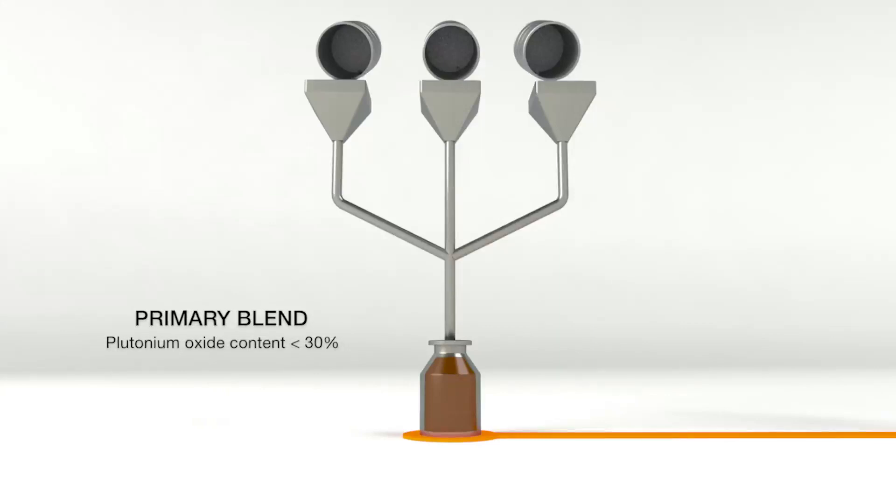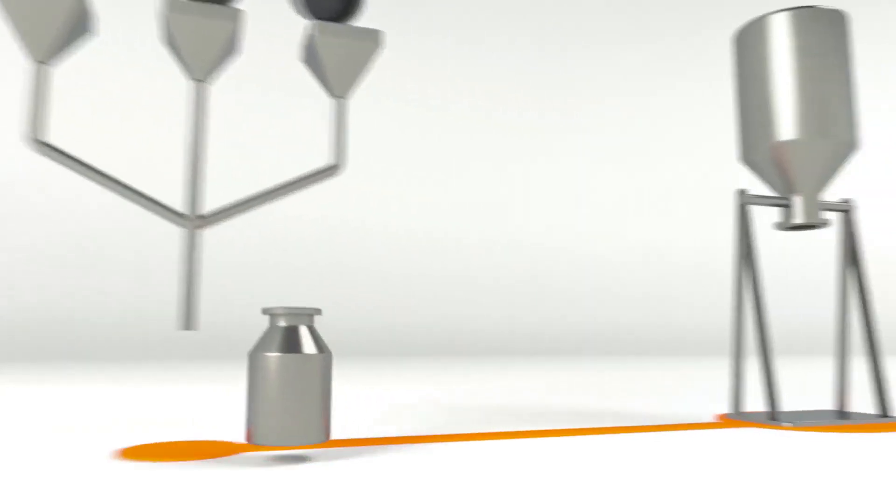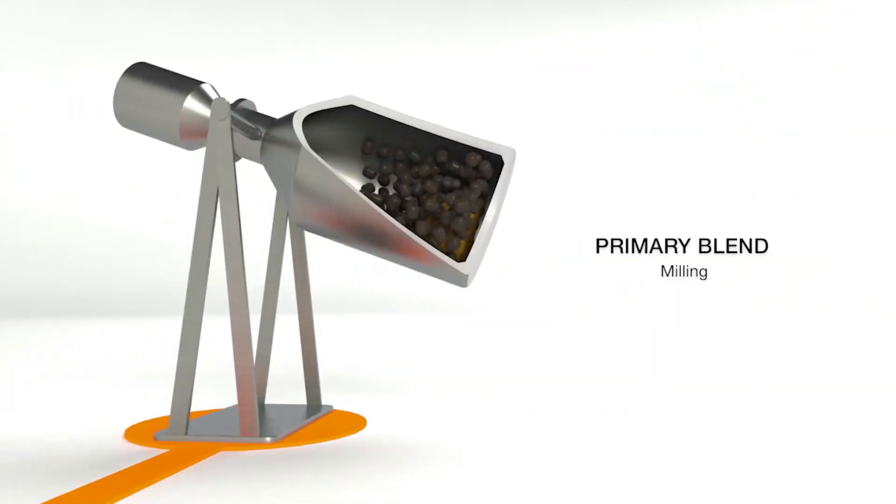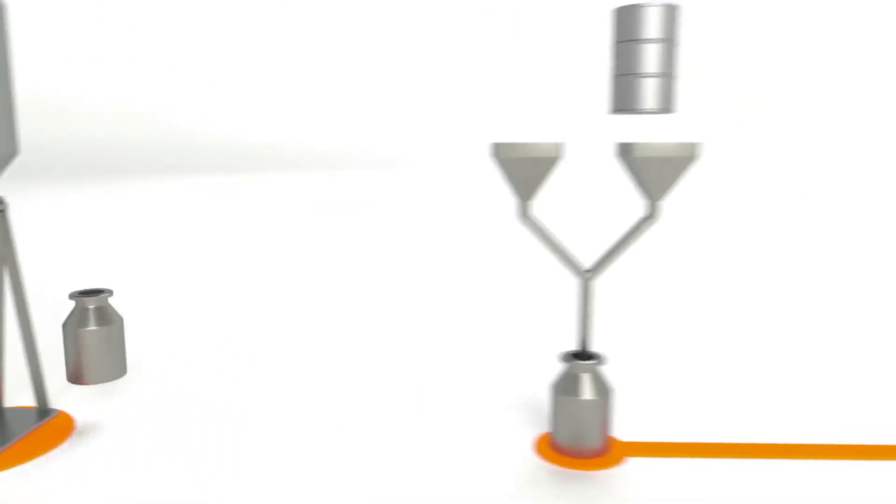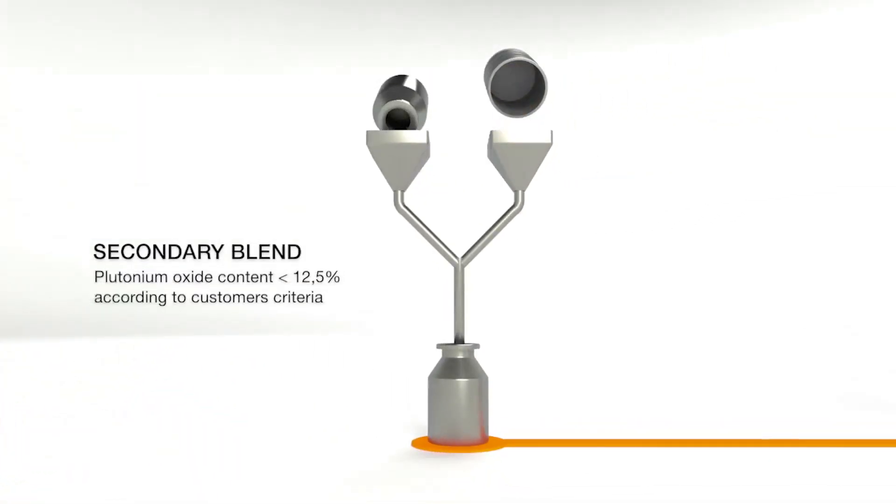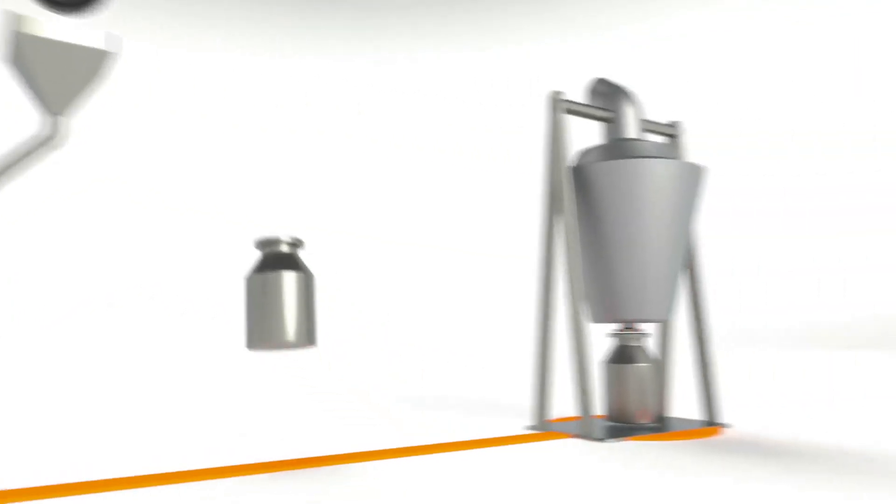The powders are blended in two stages, in which raw materials and recycled products are finely ground and thoroughly mixed. The plutonium oxide content is adjusted during the secondary blend, according to the specifications of each customer.